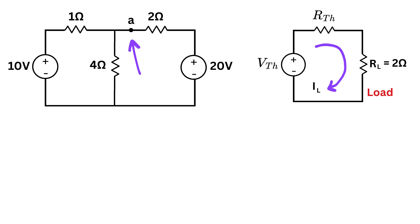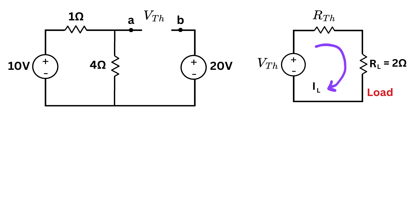Label this point as A and this as B. As a first step, we'll find VTH, or the Thevenin voltage. To do so, we remove the 2 ohm load resistor and find the voltage across points A and B, which will be VTH. We also call it an open circuit voltage because we have opened the circuit here, and the circuit is not connected anymore.